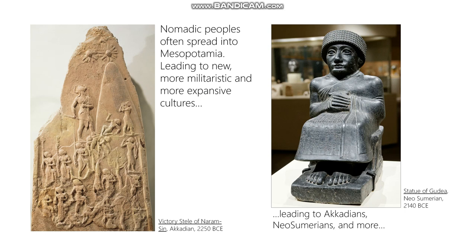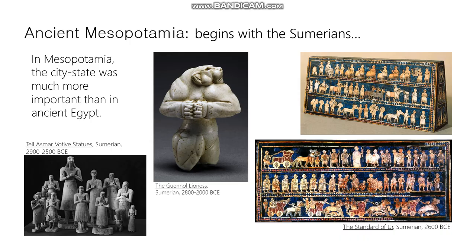In some ways the Standard of Ur sums up some key differences in ancient Mesopotamia: there was a lot more emphasis on uncertainty, war, and conquest — a lot more conflict. Another object that represents this difference is the votive figures shown here, all praying upward with their extra-large eyes.